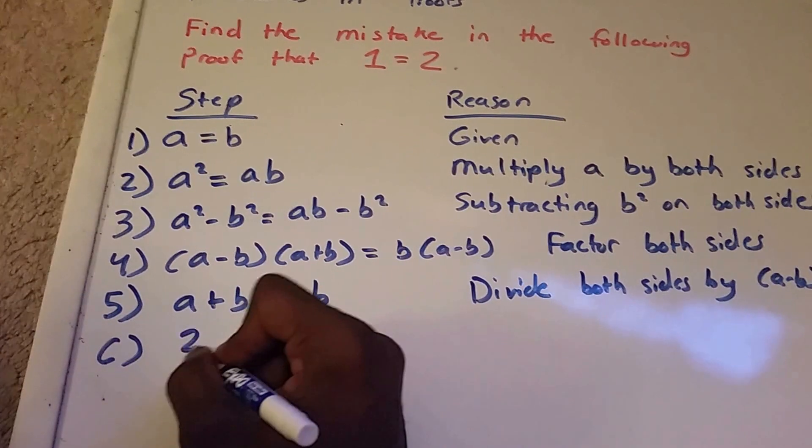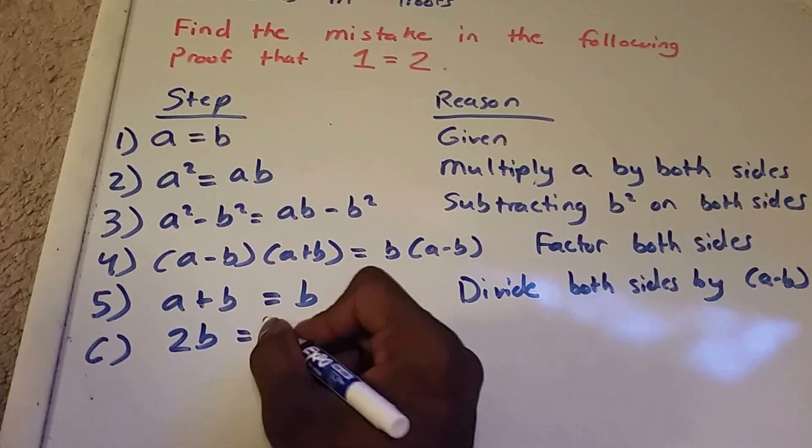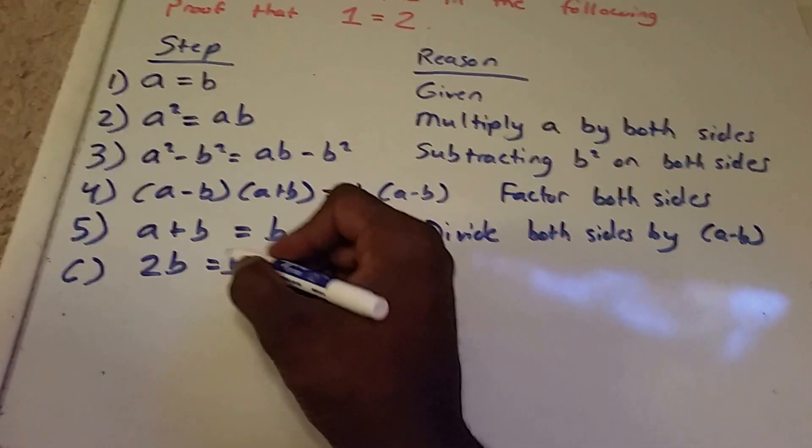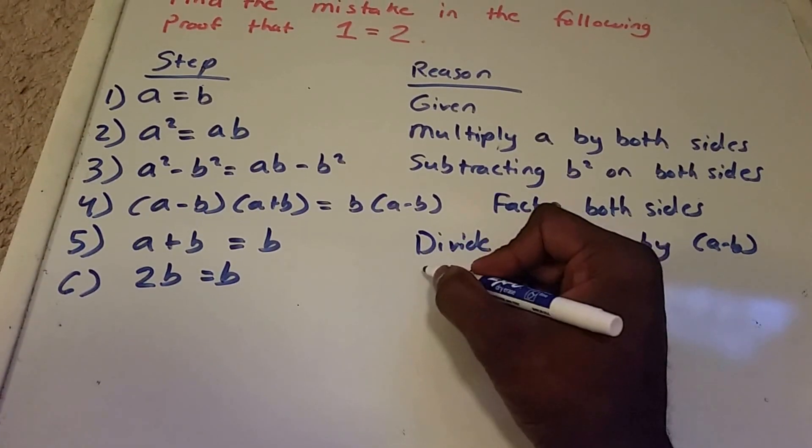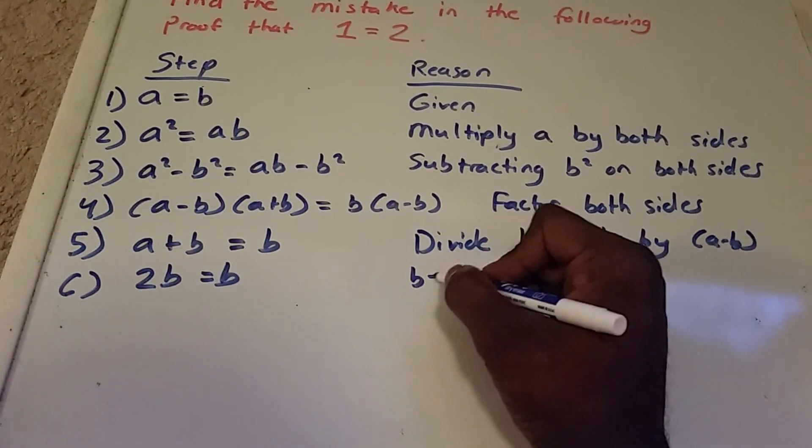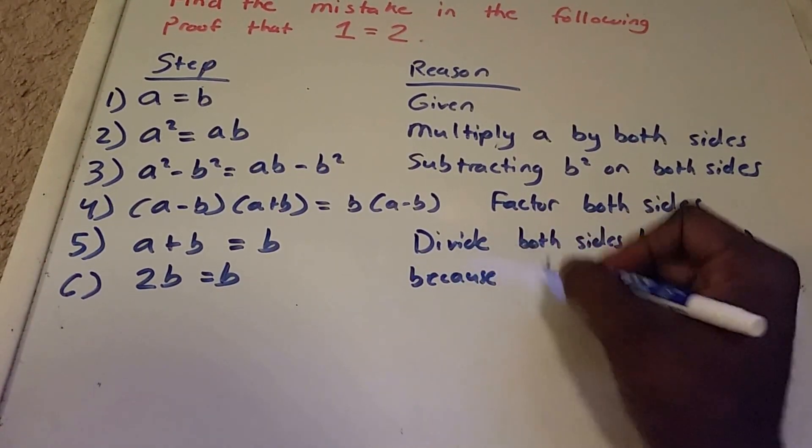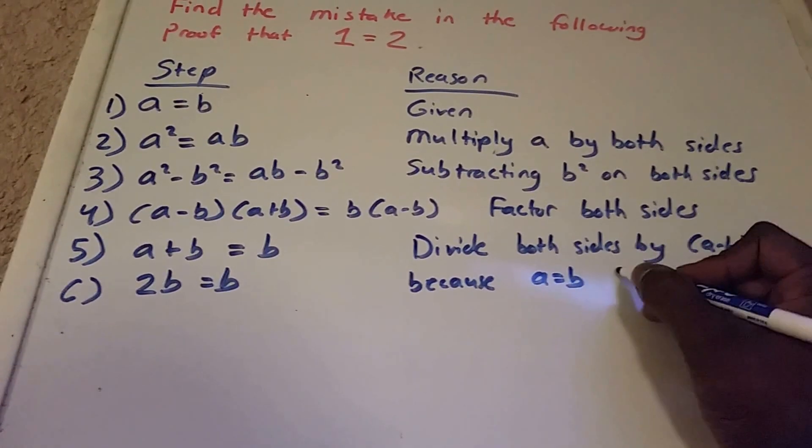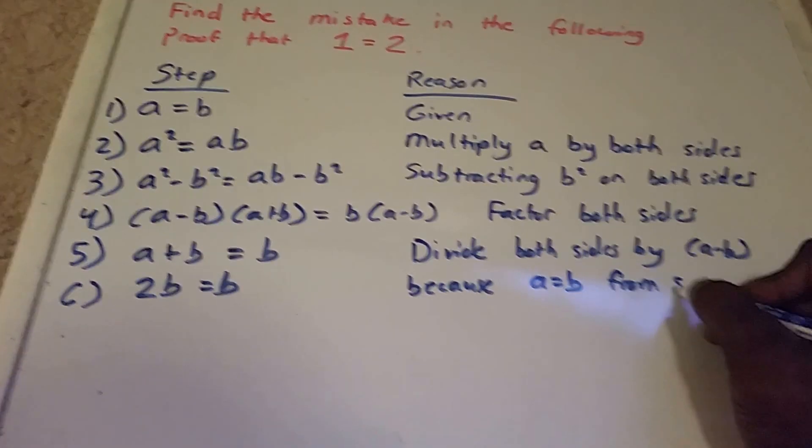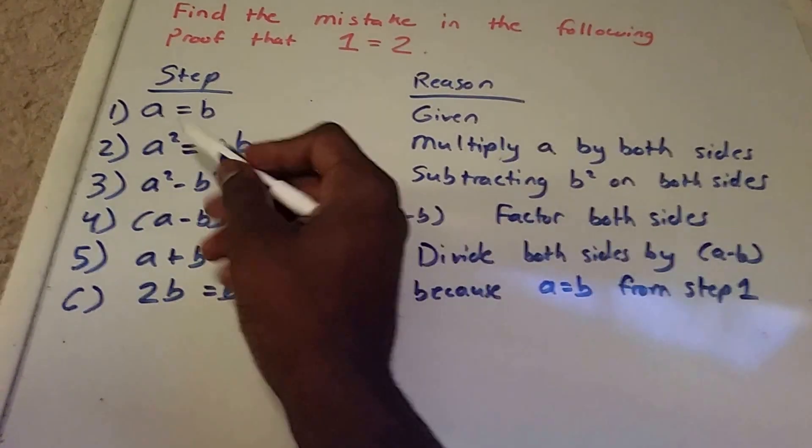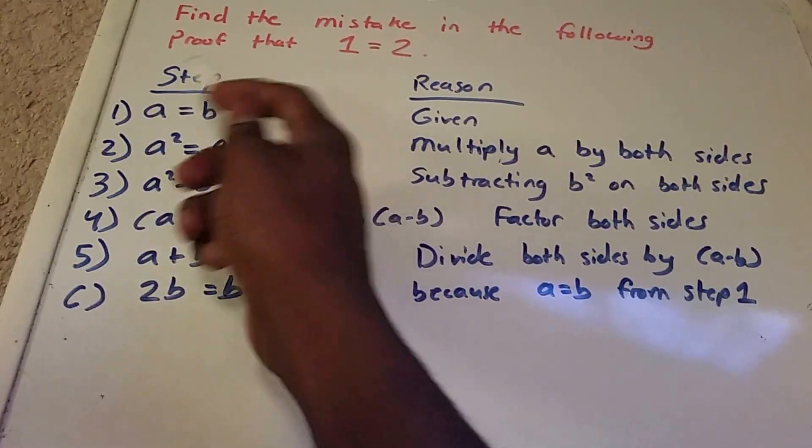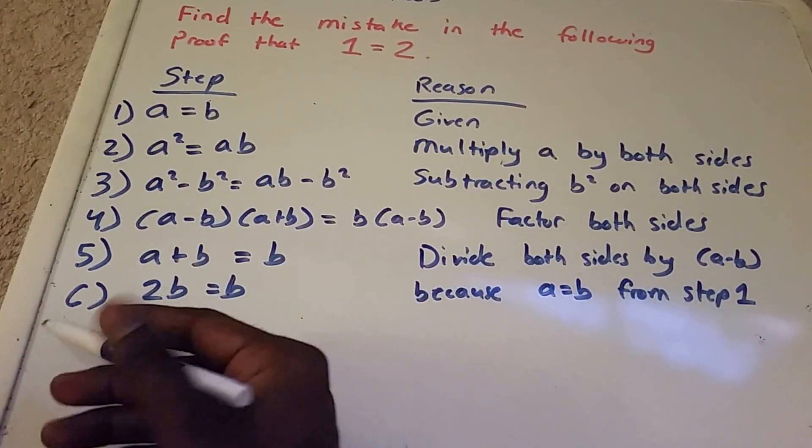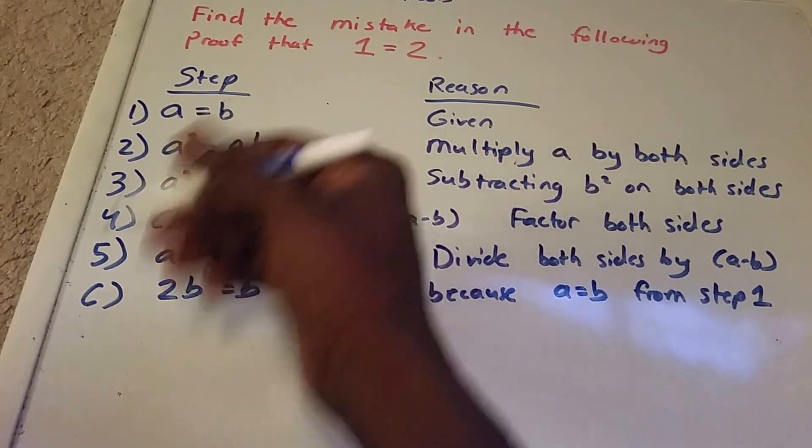Step 6: we get 2b equals b, and that's because a equals b from step 1 right there. So that means that we could replace a for b or b for a, and I just replaced a for b.